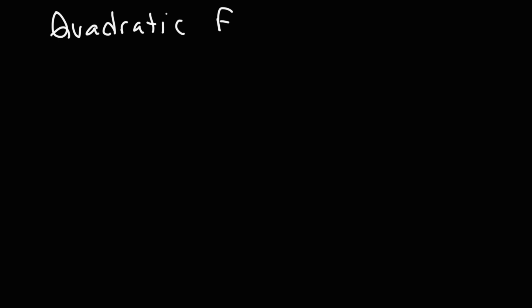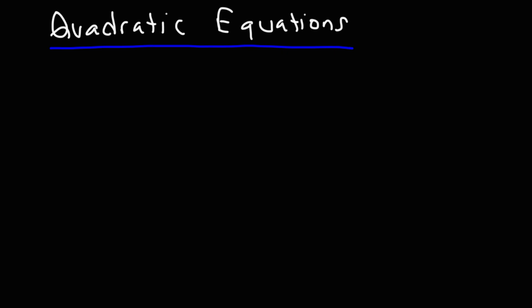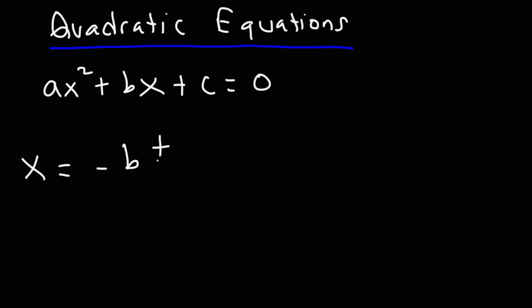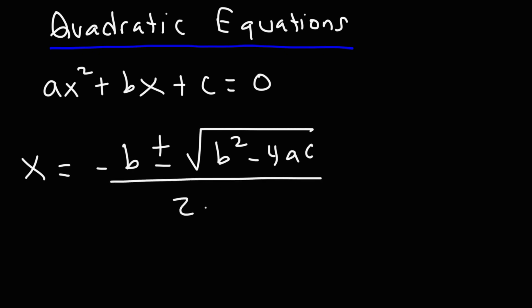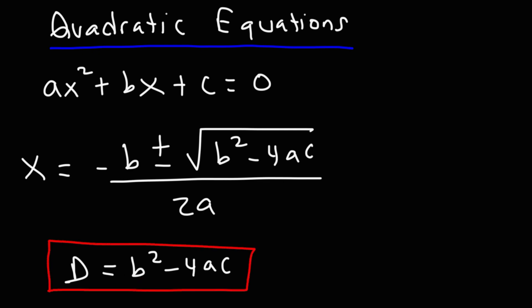Now let's move on to the formulas associated with quadratic equations. Given a quadratic equation in standard form set to zero — ax squared plus bx plus c equals zero — if we want to find the value of x, we use the quadratic formula: negative b plus or minus the square root of (b squared minus 4ac), all divided by 2a. The discriminant is b squared minus 4ac — the expression inside the square root. If the discriminant is greater than zero, you have two real solutions.